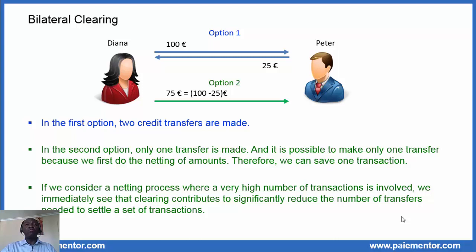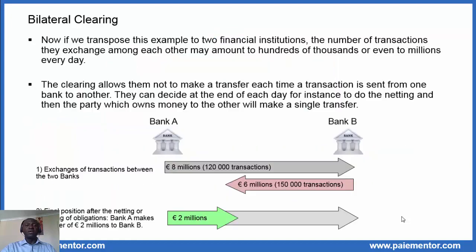Therefore, we can save one transaction. If we consider a netting process where a very high number of transactions is involved, we immediately see that clearing contributes to significantly reduce the number of transfers needed to settle a set of transactions. It is interesting to see that at the end of the day the result is the same — both parties are happy, but the processes to get the result are different. We are not saying that the first option is bad; both options are applied in reality depending on what the parties involved want to achieve.